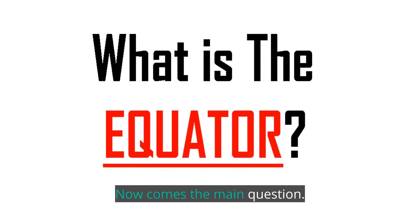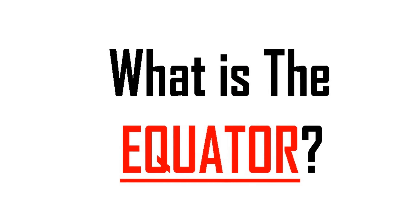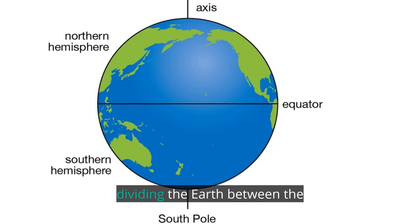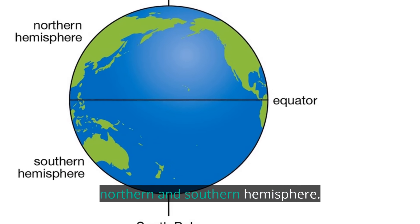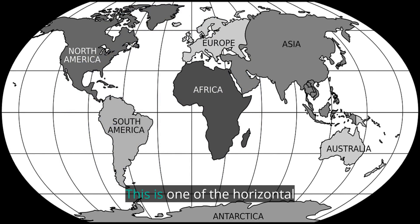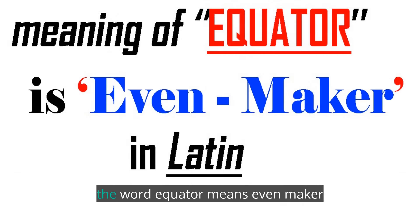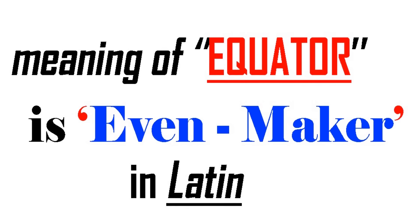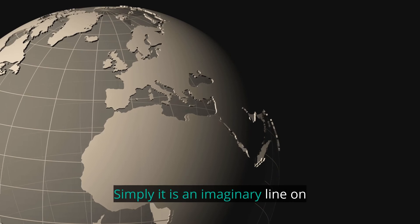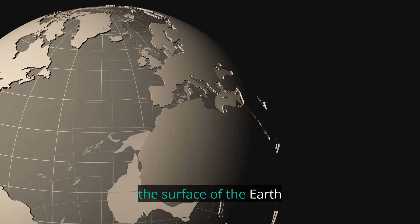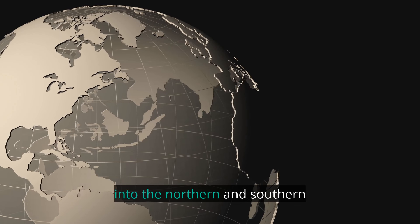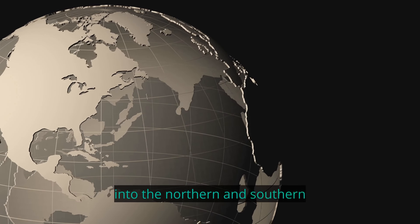Now comes the main question: what is the equator? The equator is an arbitrary line dividing the earth between the northern and southern hemisphere. This is one of the horizontal lines known as a latitude line. The word equator means 'even maker' in Latin. Simply, it is an imaginary line on the surface of the earth, equidistant from the north and south poles, separating the earth into the northern and southern hemispheres.